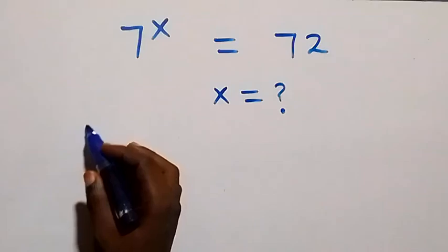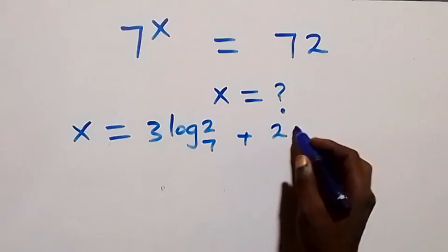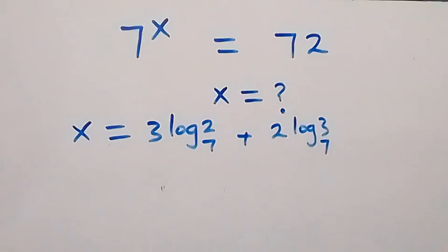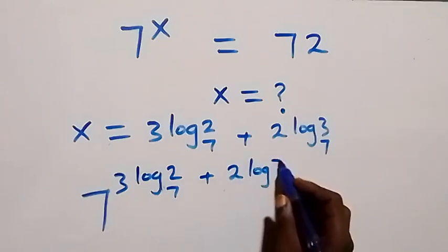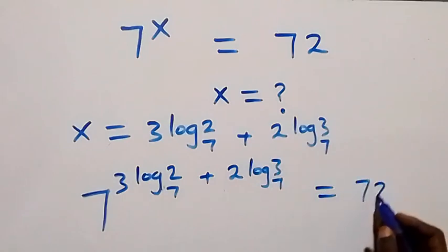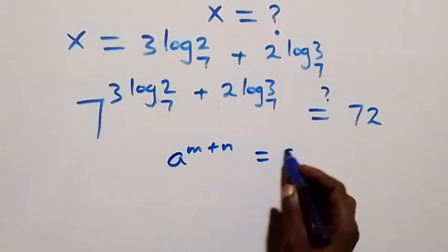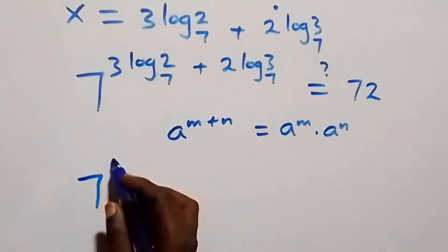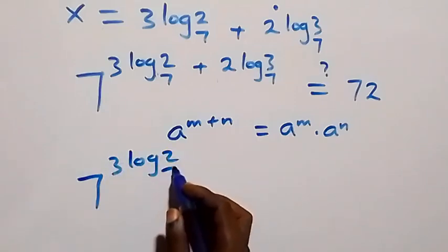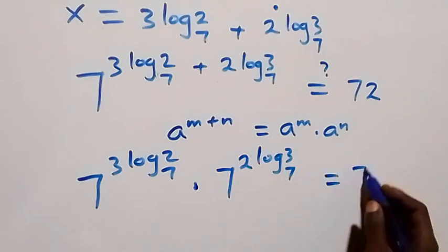Substituting x equals to 3 log₇2 plus 2 log₇3 into the original equation, we get 7 raised to that power equals 72. Applying the law of indices — a raised to power (m plus n) equals a^m times a^n — this becomes 7 raised to power 3 log₇2 times 7 raised to power 2 log₇3 equals 72.